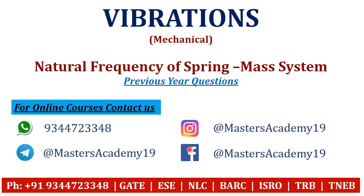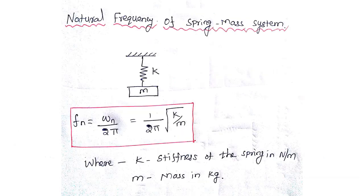Natural frequency of spring-mass system: when a mass is connected to the bottom of a spring, the natural frequency is given by f_n = ω_n / (2π), where ω_n = √(k/m). Here k is the stiffness of the spring in Newton per meter and m is the mass in kg.